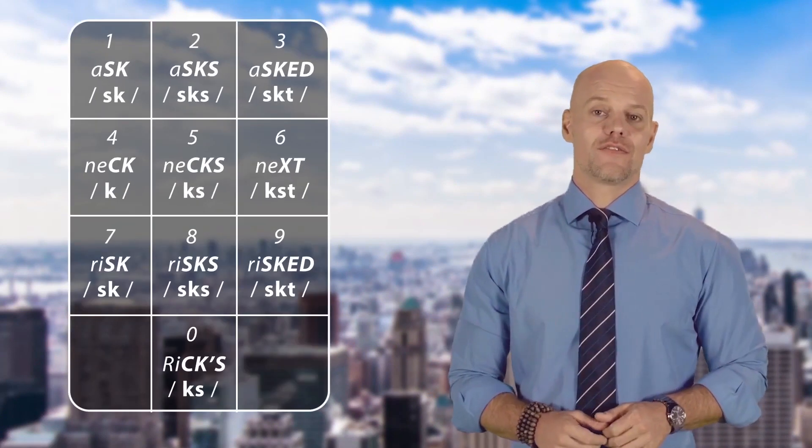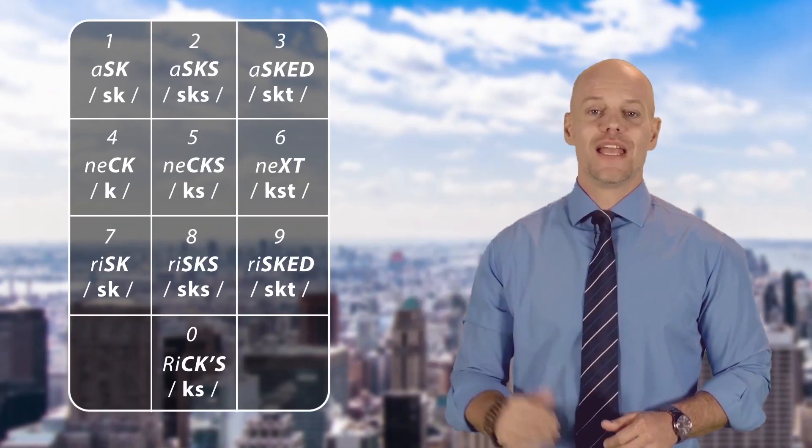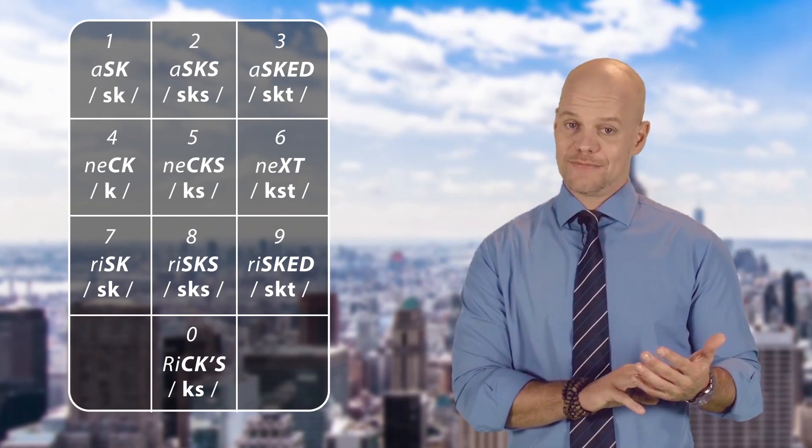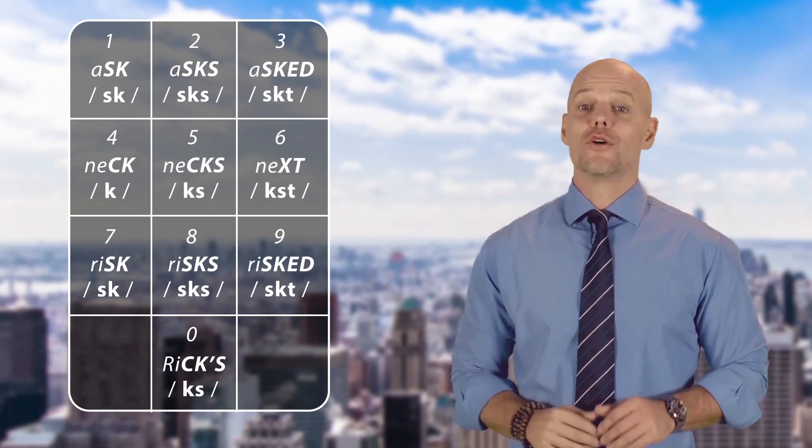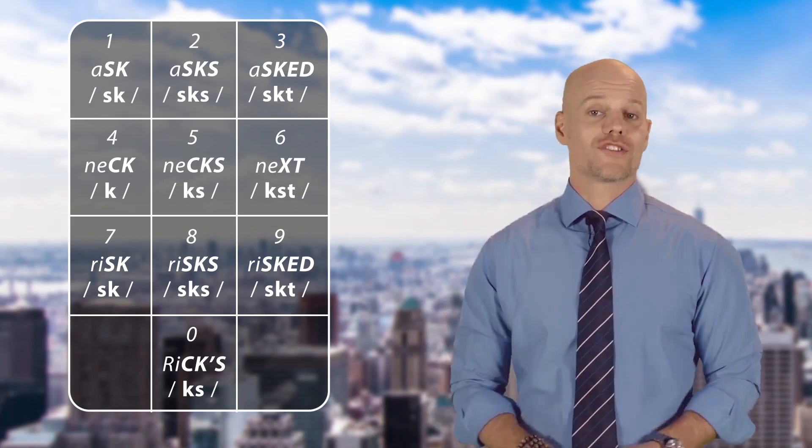In the second activity, we will test your ability to distinguish the different consonant clusters in words. You can see 10 numbers on the screen, from 1 to 0, like on a phone dialing screen. Each number is represented by a word, so there are 10 different words on the screen.